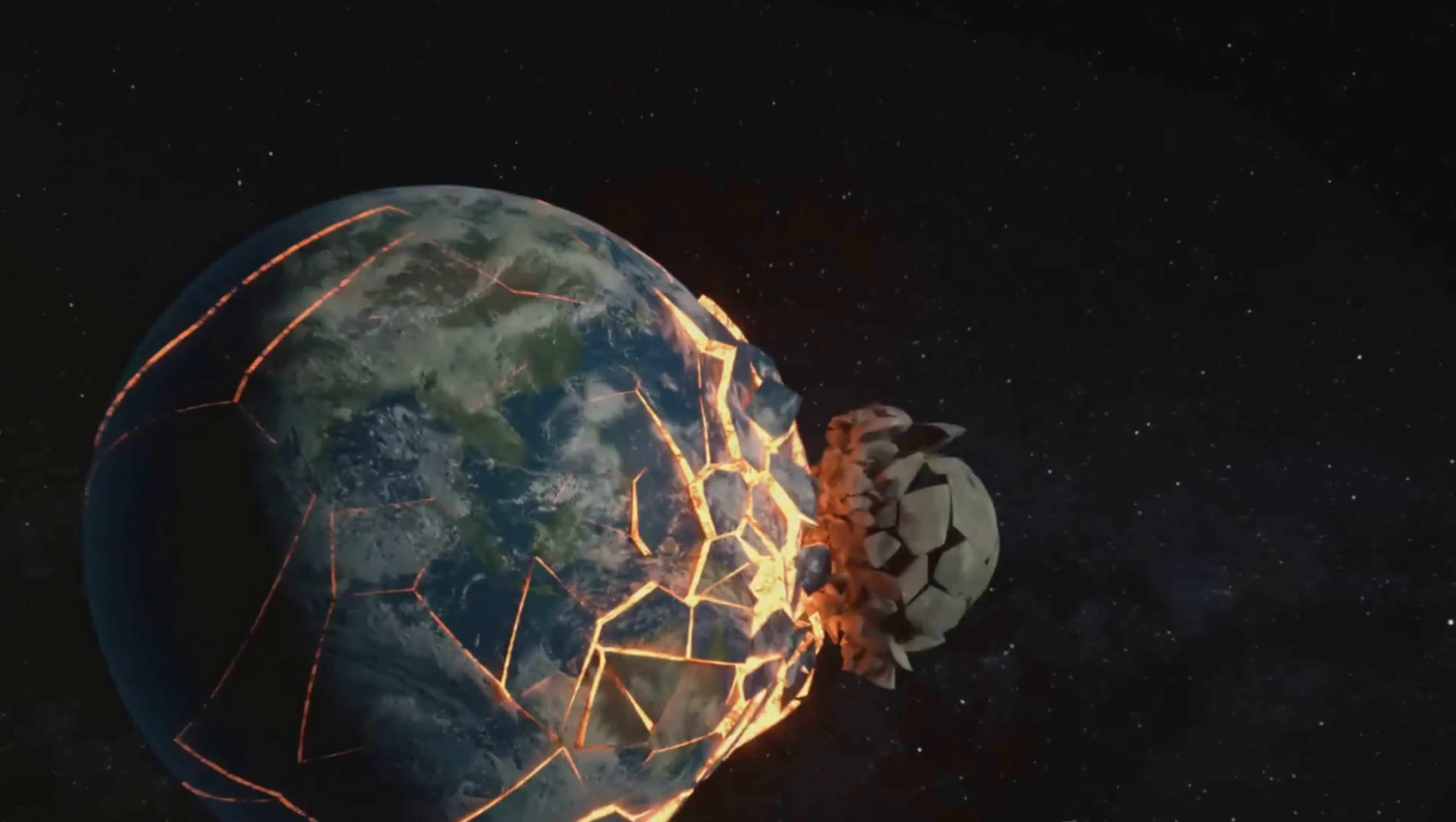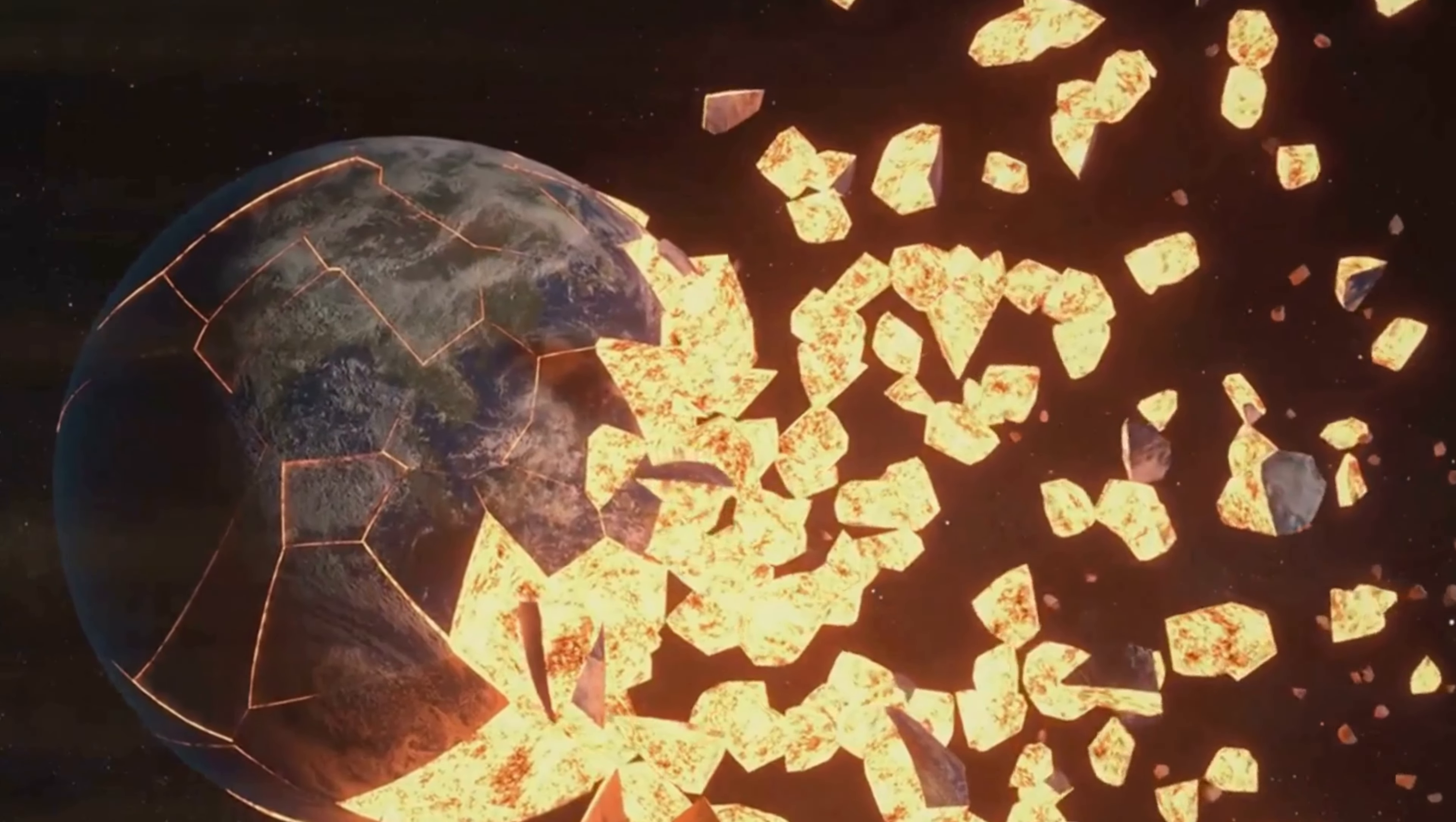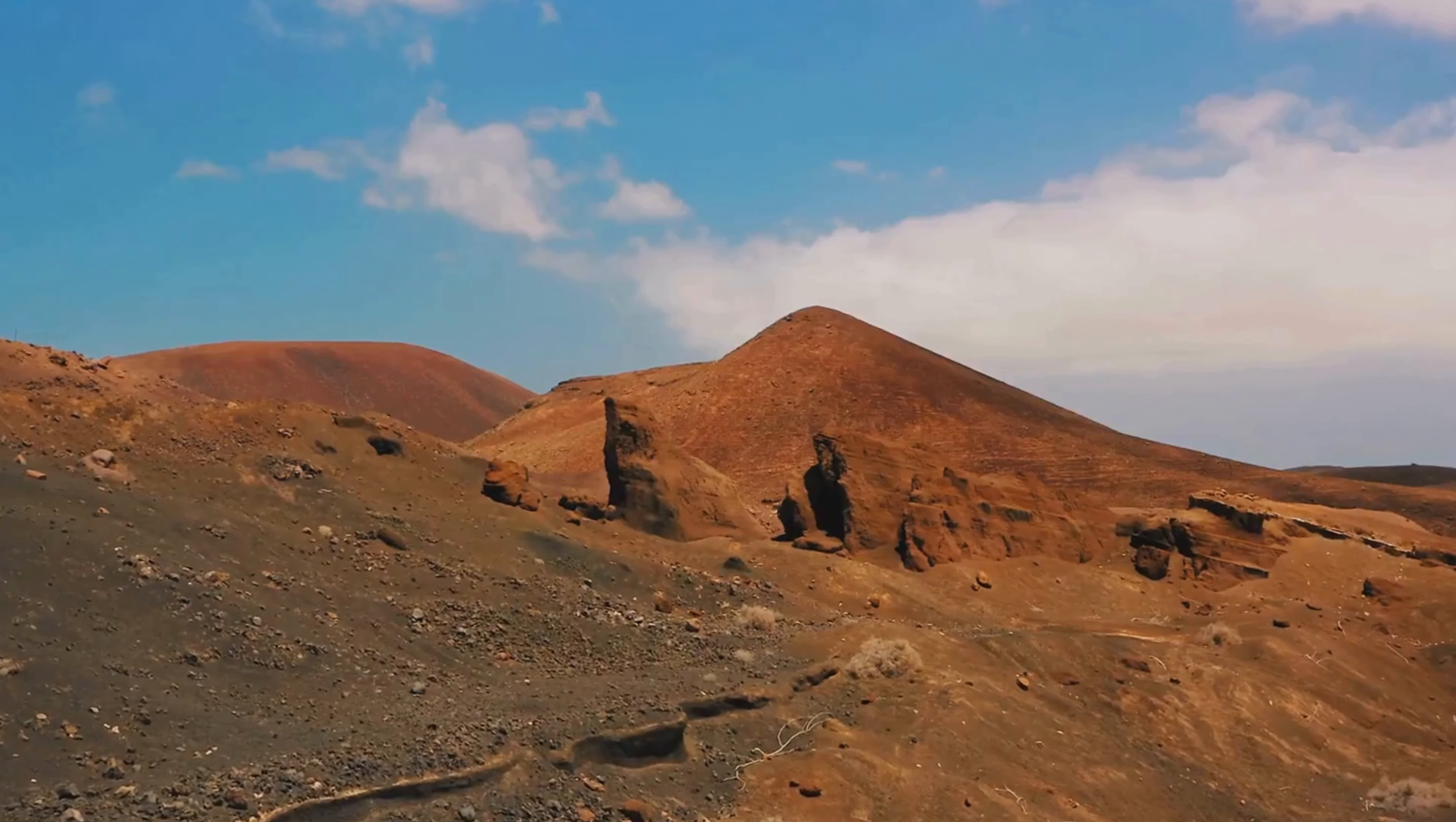However, the dumbbell configuration presents a looming risk: the potential for the planet to break apart. The constant spinning motion and the intense gravitational forces could put immense strain on the narrow middle section. Over time, this could lead to the planet tearing itself apart, resulting in two separate globes hurtling through space.